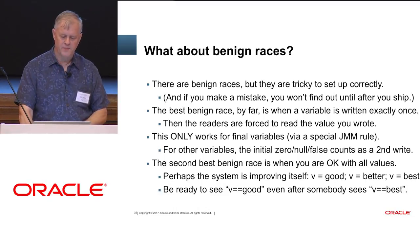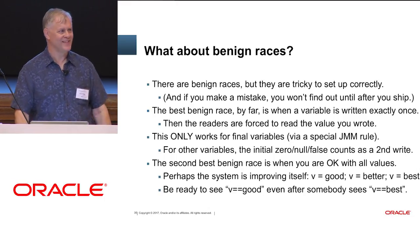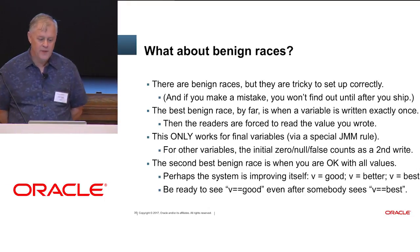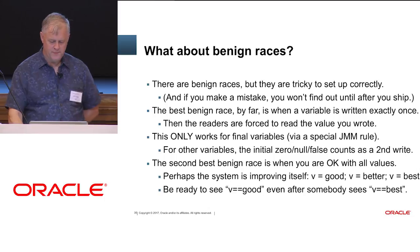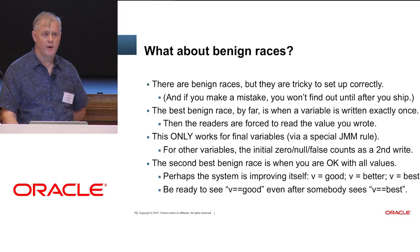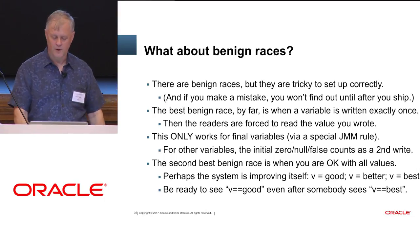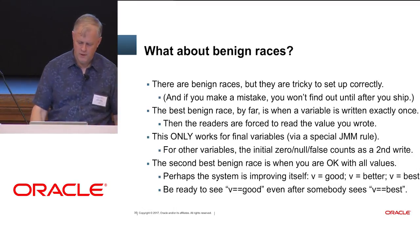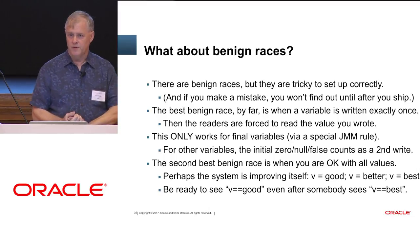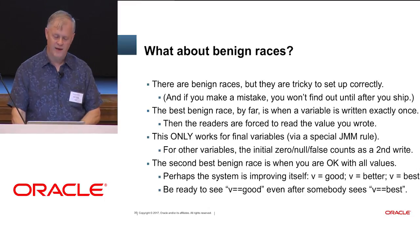There are benign races, but they're very hard to set up right, and you don't get a diagnostic if you make a mistake — you just get a race that works 99.9% of the time. The best benign race is when you write something exactly once. This only works for final variables, because other than final variables the Java memory model will give you a choice of the initializing write and the write you wanted. The second best is when you're okay with all the values that the racing writes are writing — but it's not okay as often as you'd wish.